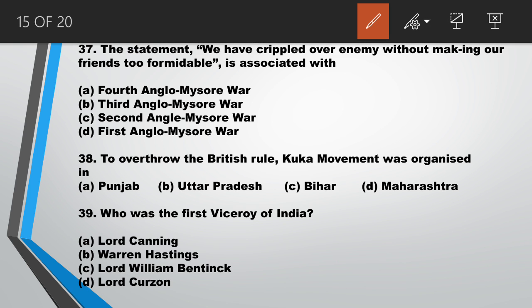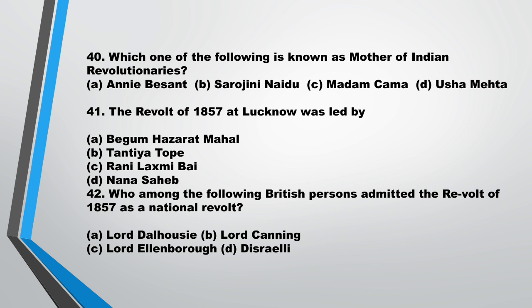Question number 37: the statement 'we have crippled our enemy without making our friends too formidable' is associated with answer B, the Third Anglo-Mysore War. Question number 38: to overthrow the British rule, the Kuka movement was organized in answer A, Punjab. Question number 39: who was the first Viceroy of India? Answer A, Lord Canning.